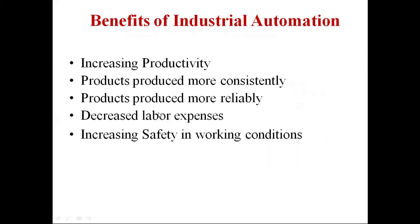Now let's look at the benefits of industrial automation. The first point is increasing productivity. If we are totally dependent on human beings, they have a particular amount of efficiency and can only work for a few hours — they can't work continuously. In the case of machines, they will work continuously for hours in a consistent manner, so obviously productivity will increase.